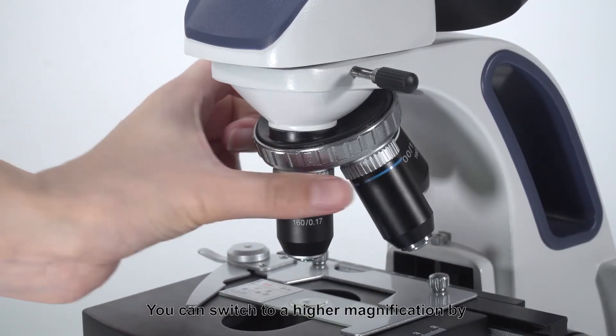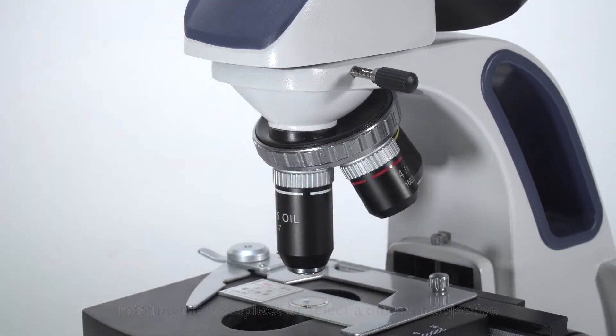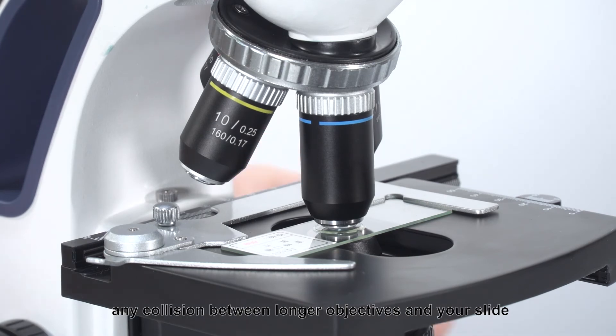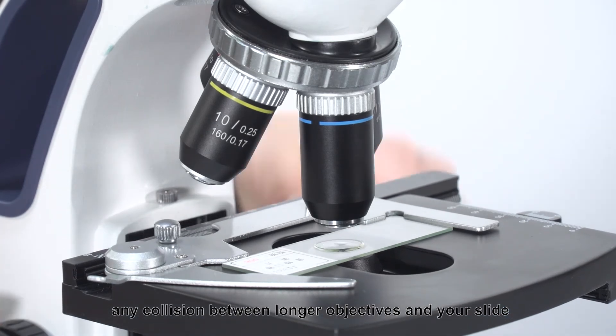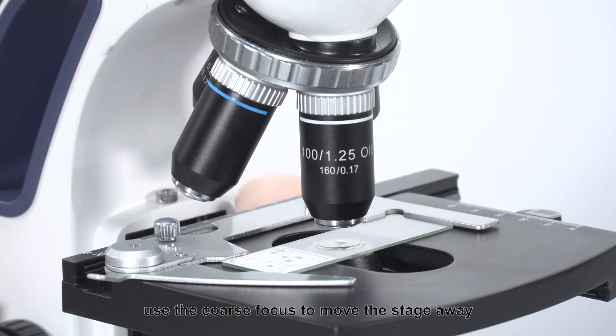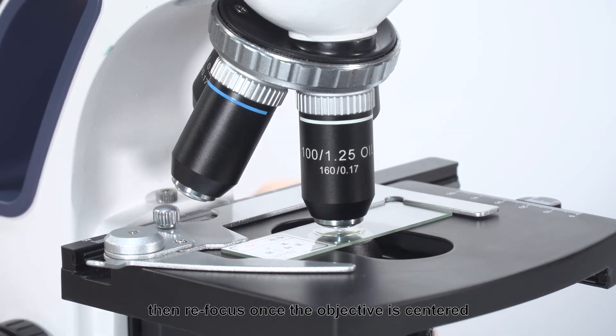You can switch to a higher magnification by rotating the nose piece to select a different objective. The safety rack stop on the microscope should prevent any collision between longer objectives and your slide. But if you can't shift the objective into place without touching the slide, use the coarse focus to move the stage away, then refocus once the objective is centered.